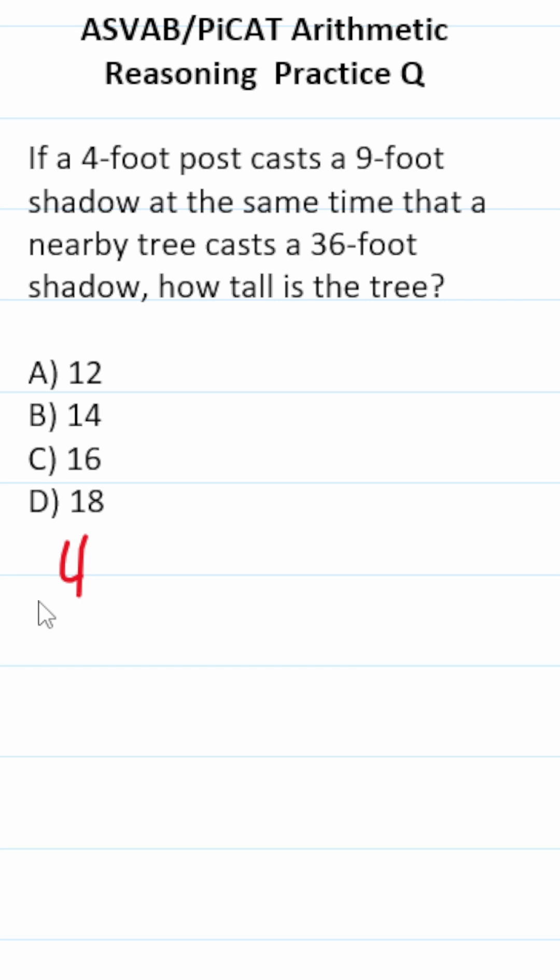We're going to use a proportion to solve this one. This is the height of the post over the length of its shadow. That's going to equal the height of the tree, which is unknown, call it x, over the length of its shadow.